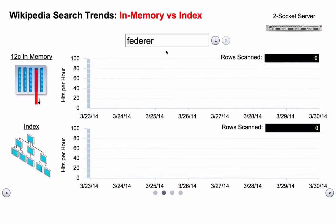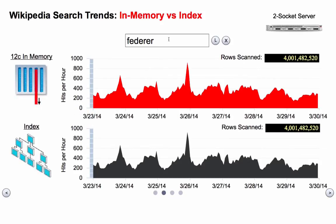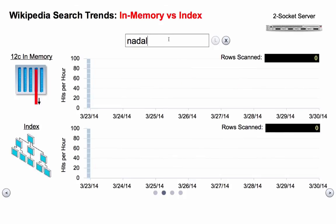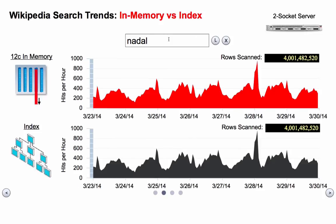Now let's compare this to what happens with our new in-memory column store. On the top in red, we have the exact same thing running against the 12C in-memory column store. On the bottom, we have the index we were just looking at. As I type all these search queries, we essentially get instantaneous results from both. The first real benefit of the in-memory column store is you don't have to pre-create these analytic indexes — you don't have to understand the data, understand the queries, and pre-create the analytic indexes. It runs really fast straight out of the box. All we did was enable the 12C in-memory column store and you got instantaneous results on the exact same data. It's much simpler than what we had before.